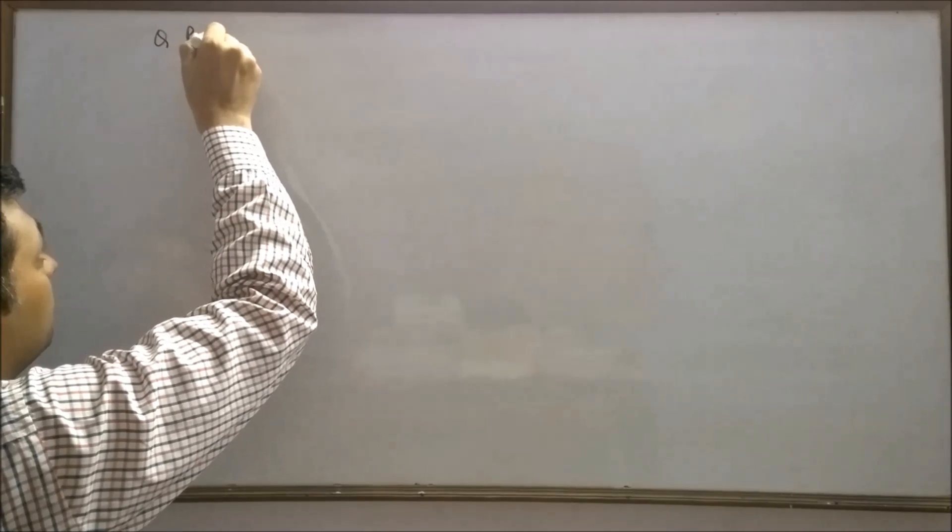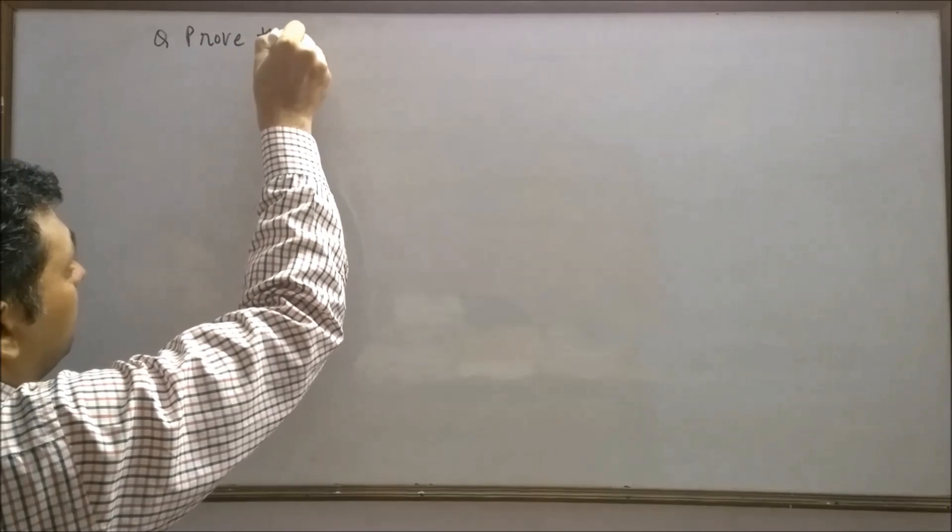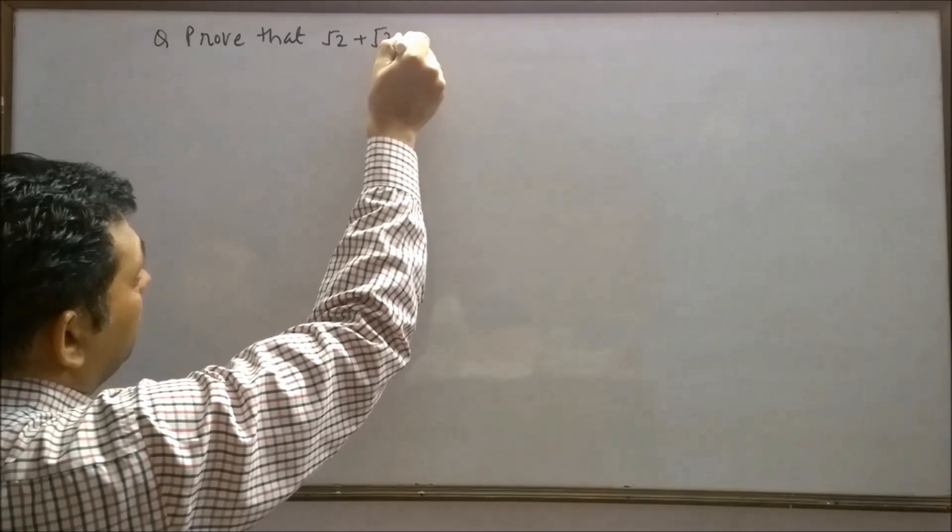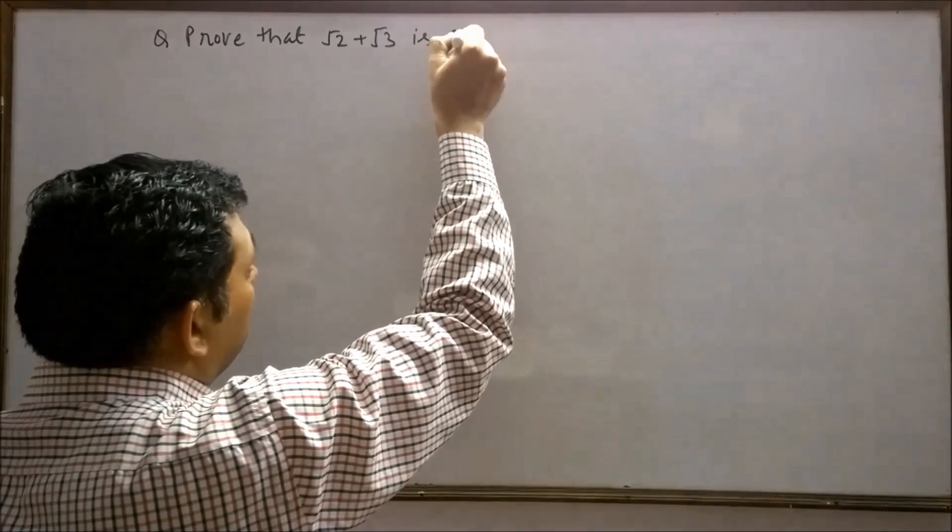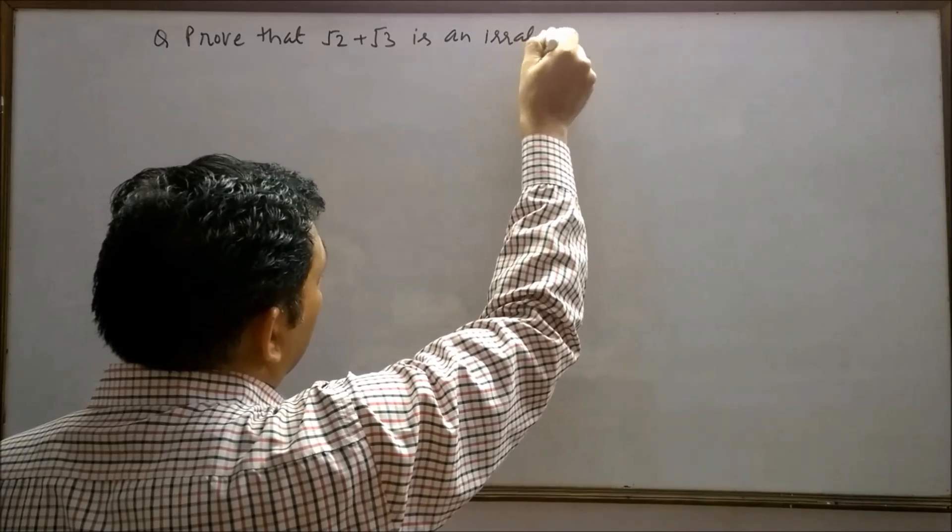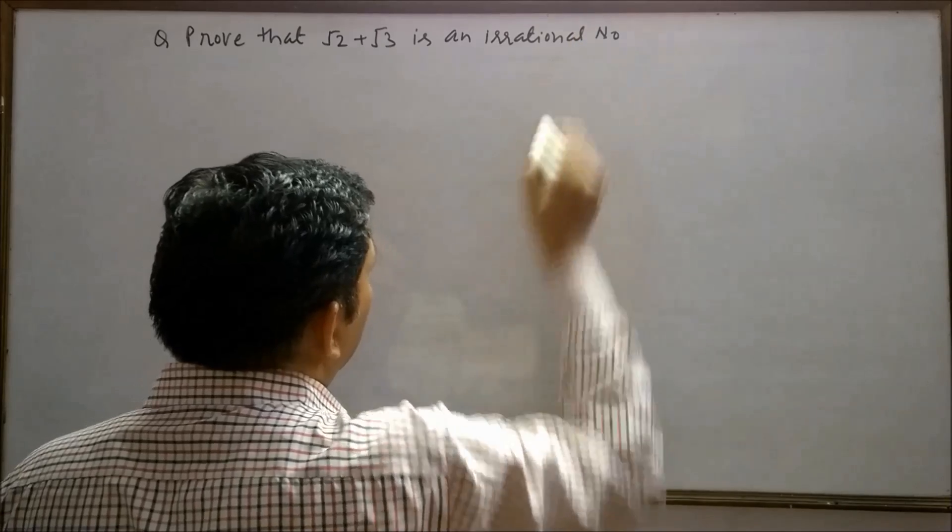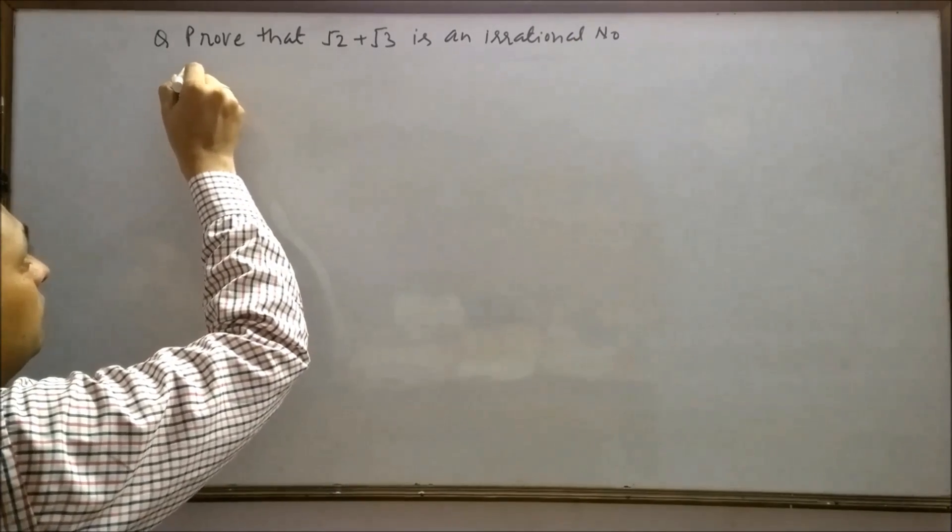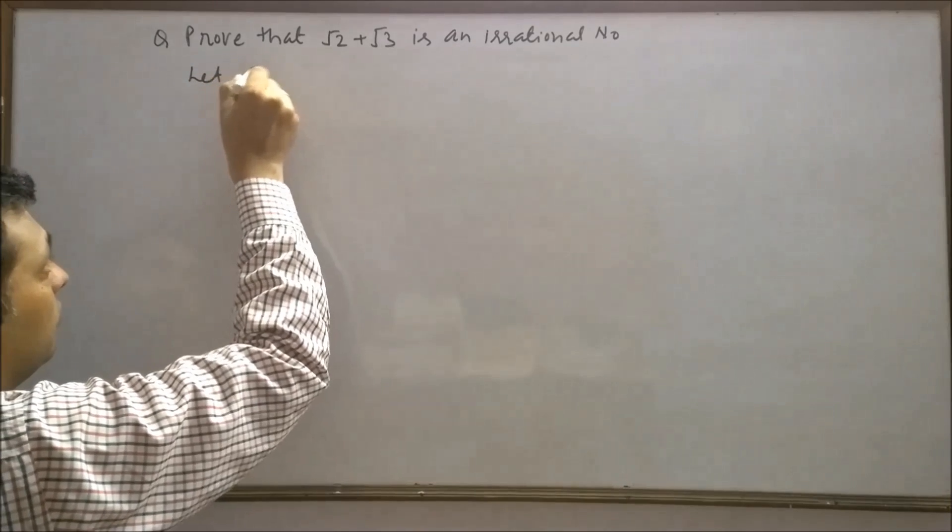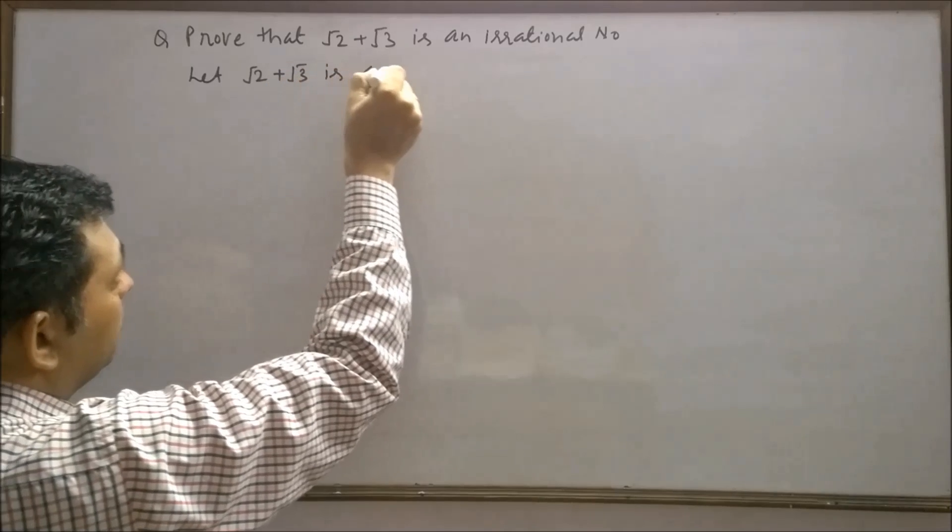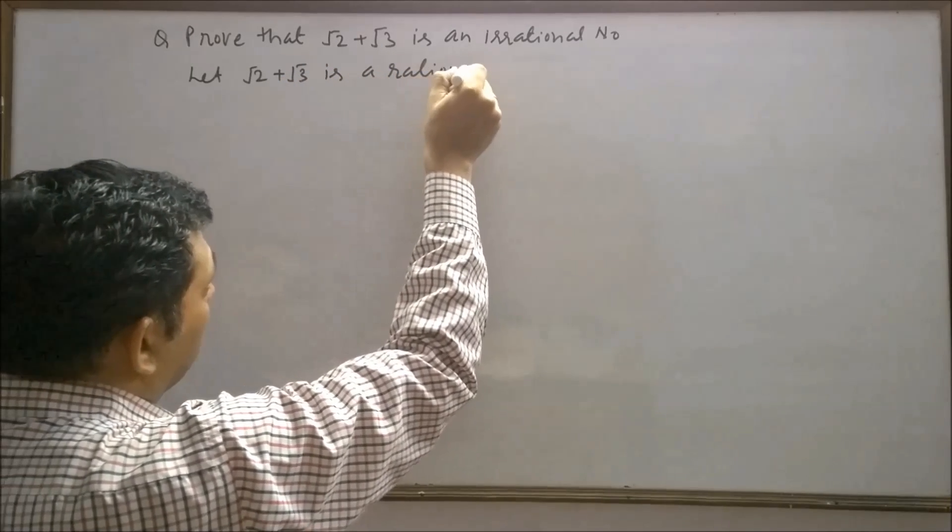The question says: prove that root 2 plus root 3 is an irrational number. Let's prove that root 2 plus root 3 is a rational number.